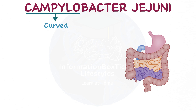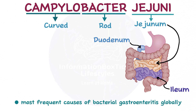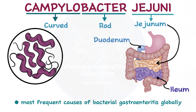Campylo means curved, Bacter means rod, and Jejuni refers to the jejunum, which is a segment of the small intestines located between the duodenum and ileum. Thus, one of the most frequent causes of bacterial gastroenteritis globally is the comma-shaped bacterium Campylobacter jejuni. Foods like poultry and unpasteurized milk frequently contain it.